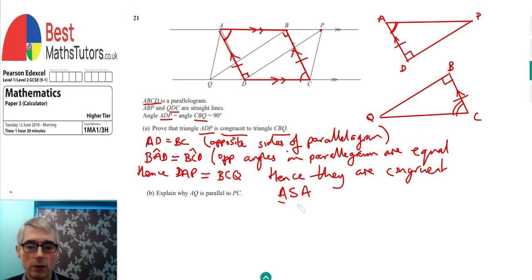So we've got an angle that's equal, a side that's equal, and another angle that's equal, ASA. Obviously, we've proven that they are congruent. I'll just write what that means again, angle, side, angle. So that's it. We've shown that these two triangles are congruent.